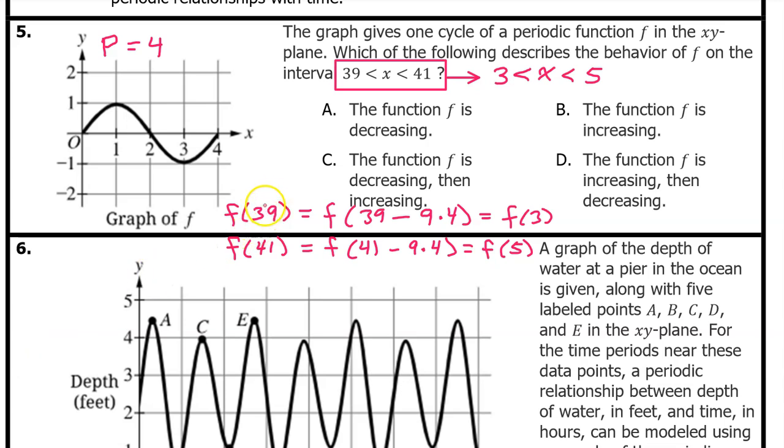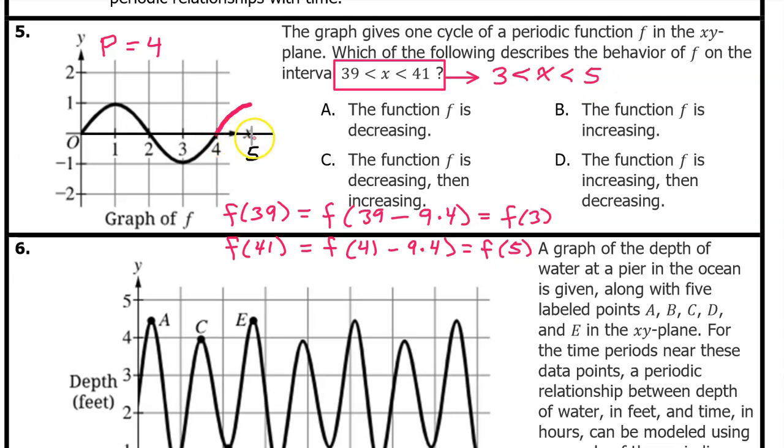We notice that an input value of 39 corresponds to an input value of 3, and an input value of 41 corresponds to an input value of 5. So the behavior of the graph on the interval from 39 to 41 will be the same as the behavior on the interval from 3 to 5. 5 is a little bit off the graph, but not so far that we can't see what's going on. f is increasing on the interval from 3 to 5. Therefore f is increasing on the interval from 39 to 41. So the answer is B.